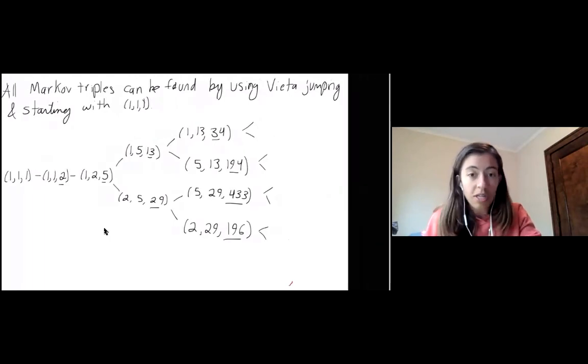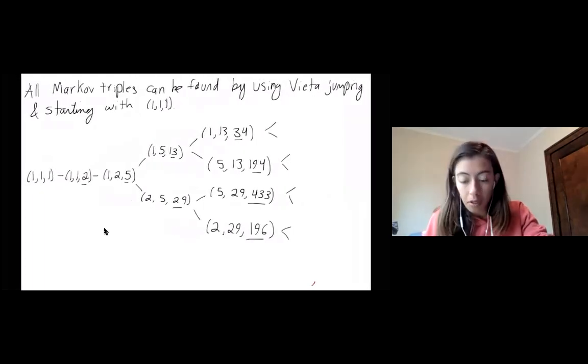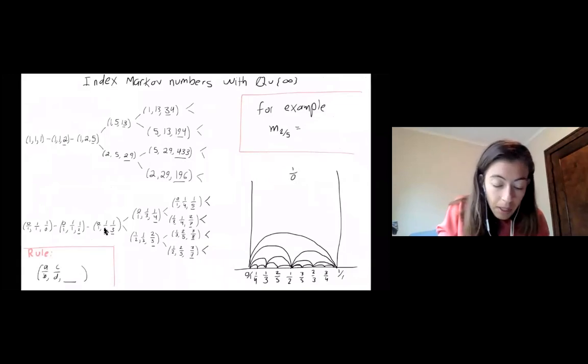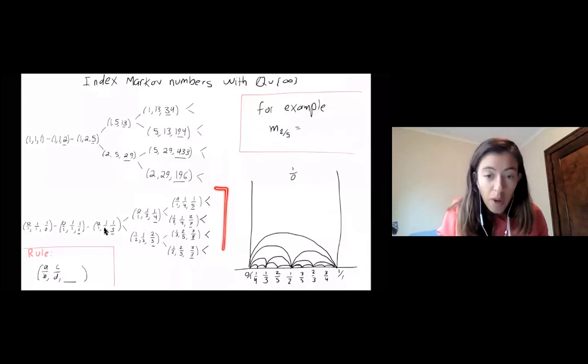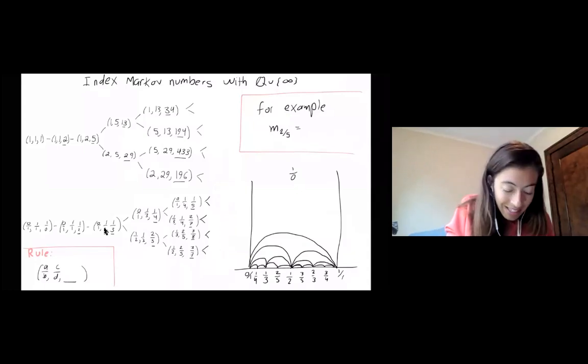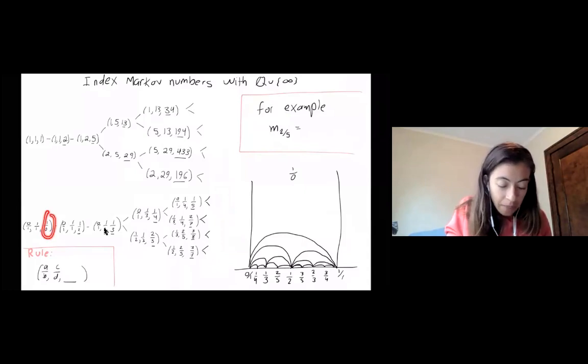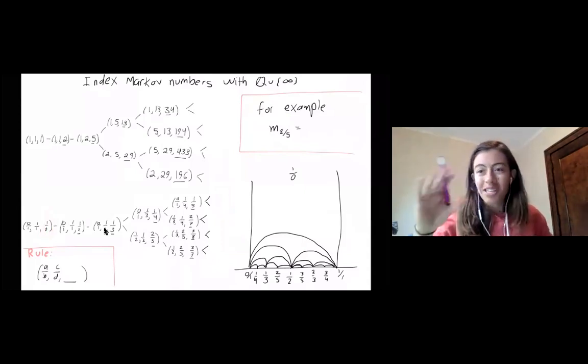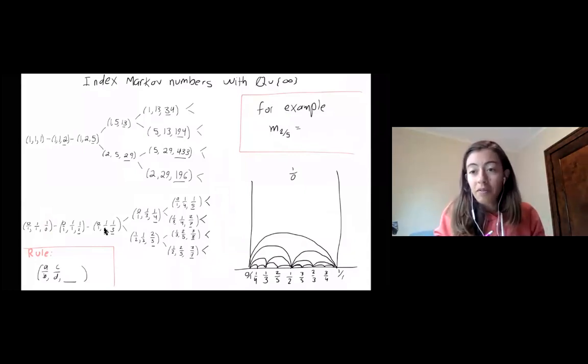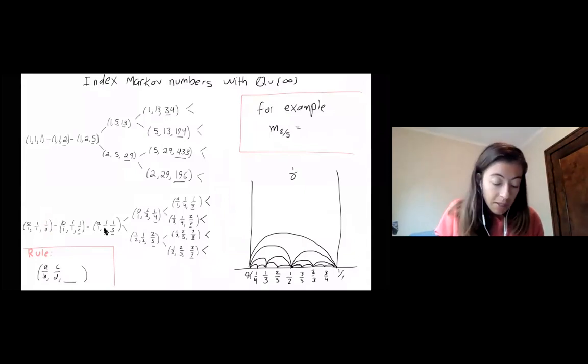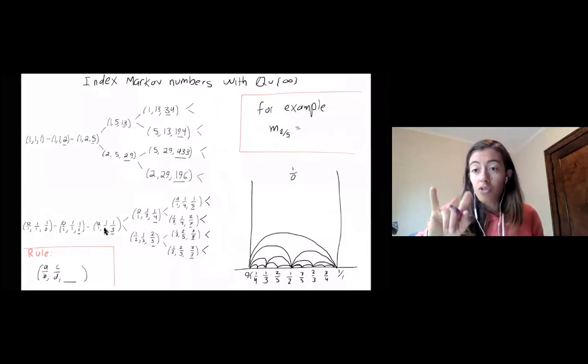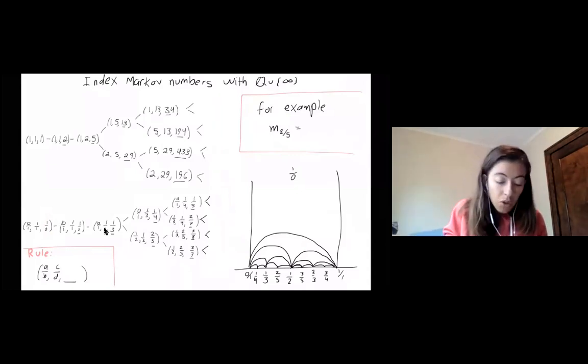Okay. So we're going to use this tree to motivate a way to label these Markov triples. So I've drawn a second tree below it. This tree has rational numbers and you'll see the forbidden one over zero. It has infinity as well. So we're going to use sort of, or we're going to start by just saying these trees look the same, but we'll make it more precise. But we'll use this to label the Markov numbers, give us a way to reference different Markov numbers. So the right, we know the rule on the top that Vata jumping is how we go from one triple to the next. The rule on the bottom